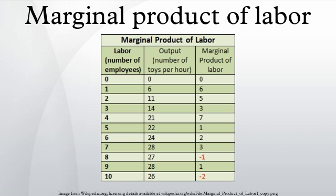MC equals ΔVC/ΔQ. ΔVC equals WL times ΔL/ΔQ. The change in quantity of labor to effect a one unit change in output equals 1/MPL. Therefore, MC equals W/MPL. Thus if the marginal product of labor is rising then marginal costs will be falling, and if the marginal product of labor is falling, marginal costs will be rising.